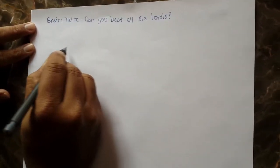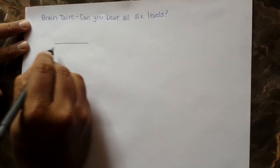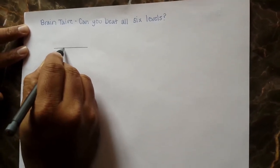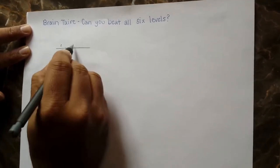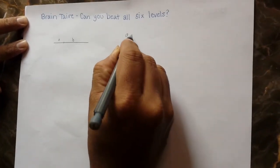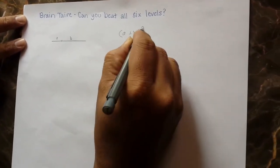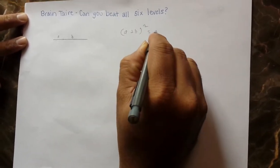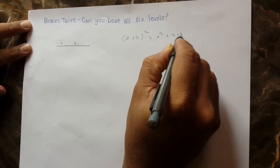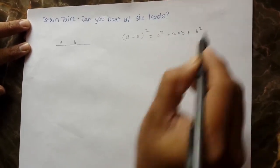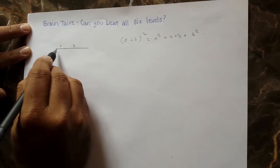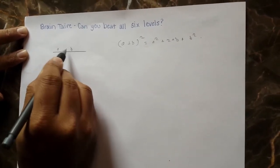As you can see, this is a line and I'm just breaking it into a and b. If you want to find the square of a plus b, the equation is a squared plus 2ab plus b squared. So since the line is a plus b, let's find the square.